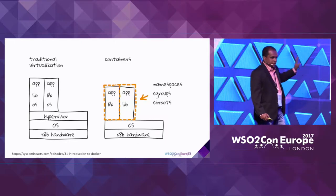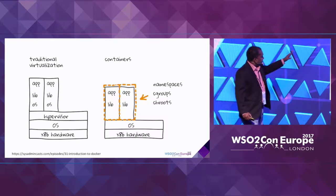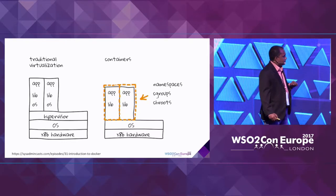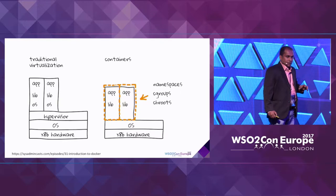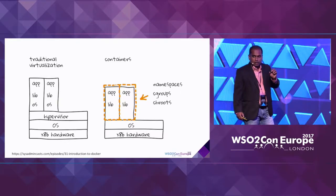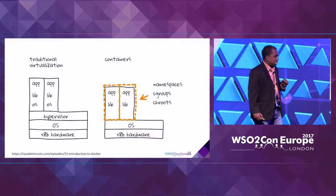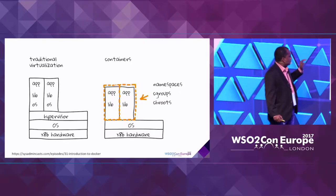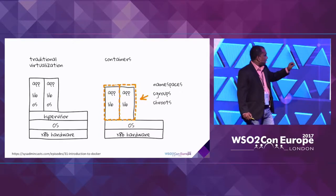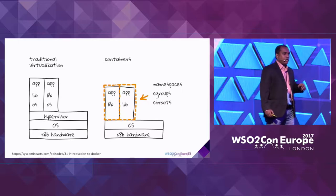If you carefully look at these two images, in the VM you can see there's an OS component inside the isolation, but in containers there's no OS component. In containers, we are sharing the kernel functionality from the host OS, and this gives a lot of benefits. Normally we say containers are very lightweight.